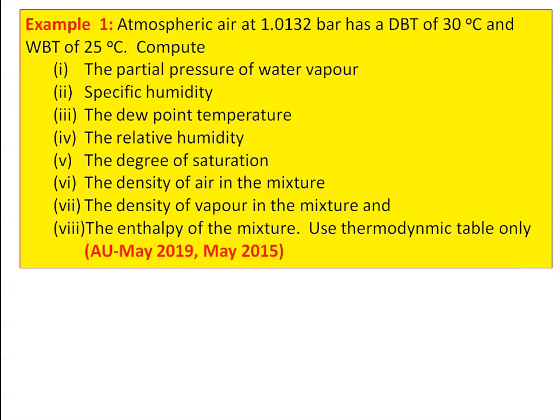Compute: (1) partial pressure of water vapor, (2) specific humidity, (3) dew point temperature, (4) relative humidity, (5) degree of saturation, (6) density of air in the mixture, (7) density of vapor in the mixture, and (8) enthalpy of the mixture. You have to use only the thermodynamic table — the steam table — and calculate using the equations.